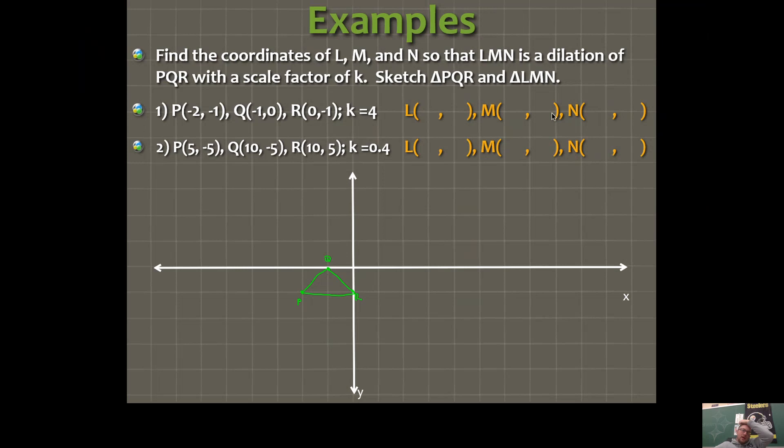Now, you're also going to plot points L, M, and N as well, but you need to use this scale factor. Notice how our scale factor here is bigger than one. So what that tells you is, it's going to be an enlargement. This figure is going to get larger, and we're going to call it triangle LMN. And the two figures will be similar. That's the idea. So use your scale factor. Multiply all of these coordinates by four. So we'll call this negative eight, negative four. Point M would be negative four, zero. And point N would be zero, negative four.